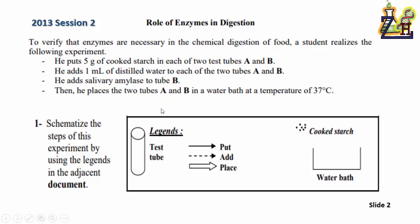For example, I have to draw this arrow for the verb put. For the verb add, I have to draw this arrow. And for the verb place, I have to draw this arrow.